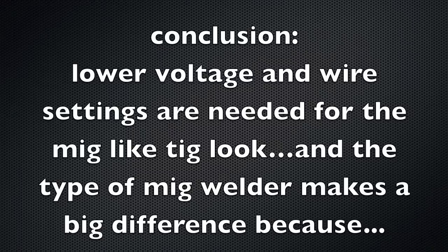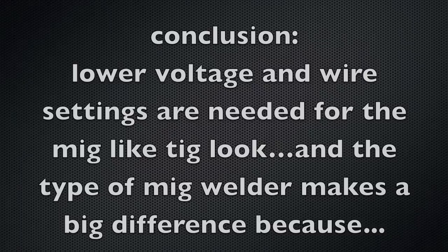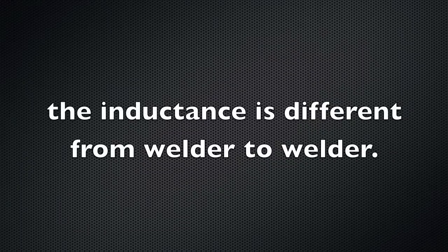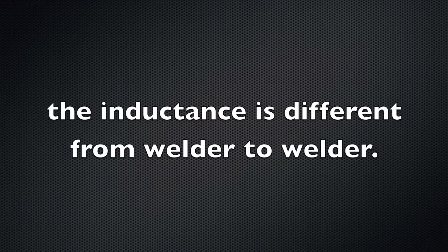Now, here's my conclusion, lower voltage and wire feed speed settings are normally needed to get that MIG-like TIG look. And also, because ZT Fab mentioned he uses a Lincoln Power MIG 200, I have to believe that the welder itself makes a difference and that would be because every welder has a different inductance setting.